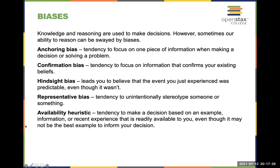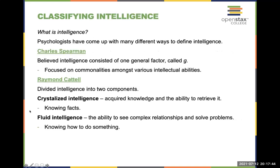Now we're going to talk about how we classify intelligence. Psychologists define intelligence in many different ways. Charles Spearman believed intelligence consisted of one general factor called 'g,' which focused on commonalities across various intellectual abilities. Raymond Cattell divided intelligence into two components: crystallized intelligence and fluid intelligence.